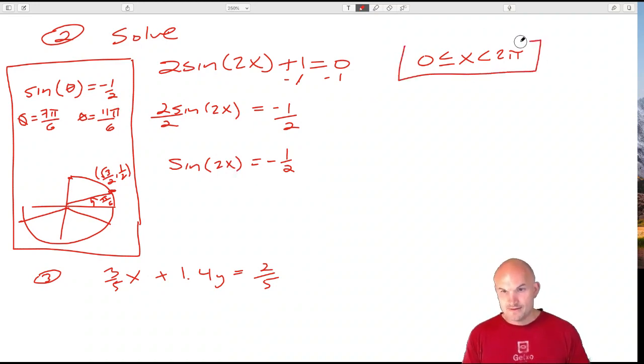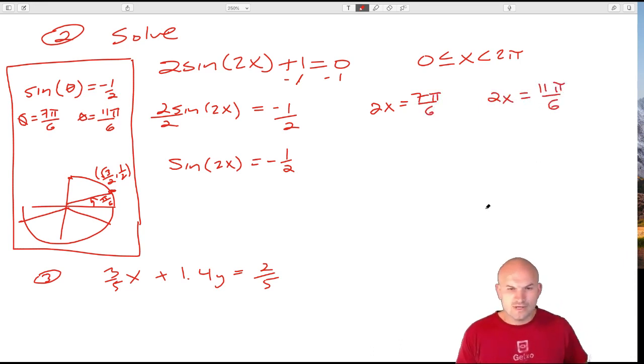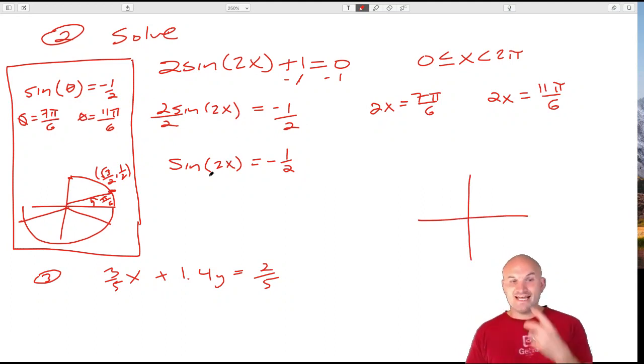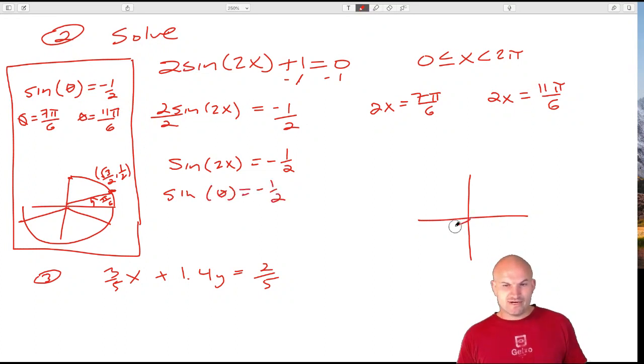Forget about this restriction for a second. Let's just find all the real solutions. So I'm going to solve for 2x. So I'm going to say 2x = 7π/6. We know that answer is correct. And 2x = 11π/6. Alright, so I think my explanation is getting a little weak here. Let me explain here again. Let's go back through this. So we know that sine of some angle equals -1/2. Now we know those two angles are down here.